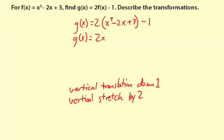and I'm going to distribute this to 2x to the third, then 2 times negative 2x is negative 4x. And then 2 times 3 is 6, so plus 6, and we have our minus 1.